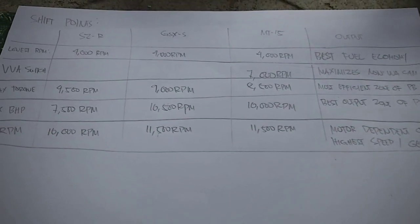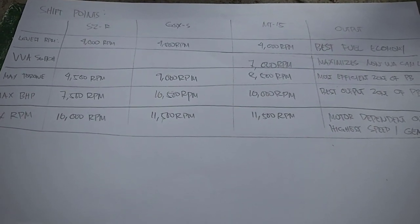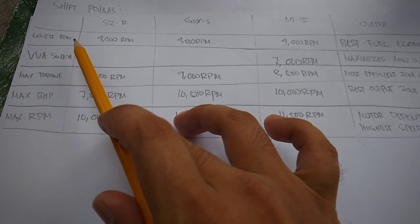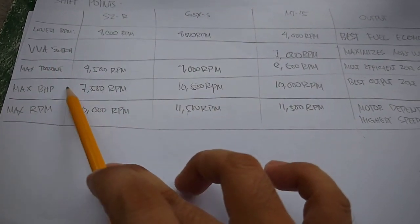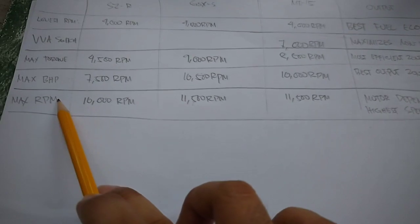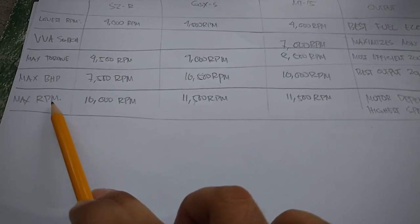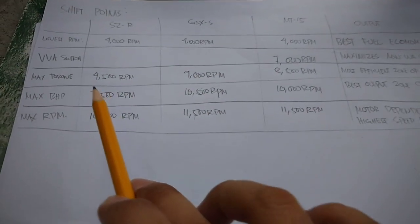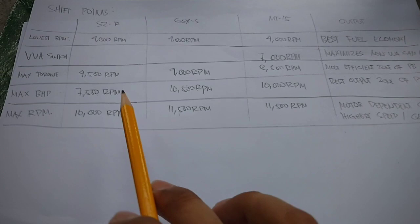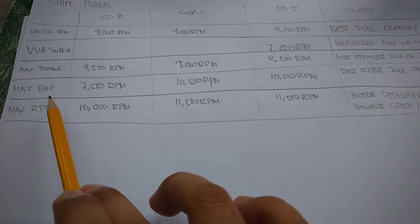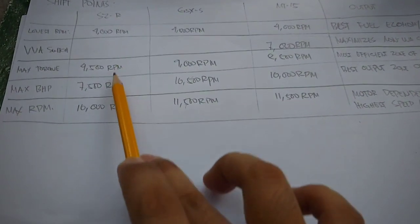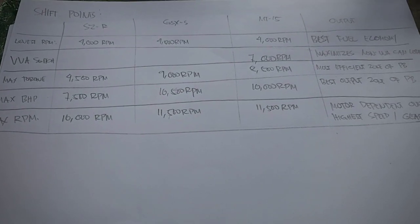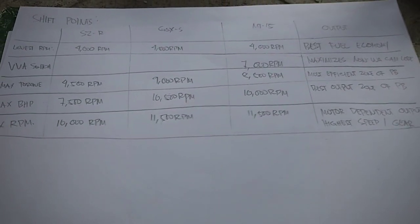So summarize natin, kung kailan yung optimum time para mag-shift: the lowest RPM, maximum torque, and maximum horsepower, as well as yung maximum RPM ng motor mo. Maximum RPM below the red line, not beyond the red line. So if ano yung modelo ng motor mo, just use Google search, hanapin mo yung maximum torque and maximum horsepower niya kung saan RPM sila lumalabas and then shift accordingly para ma-maximize yung gamit ng makina ng motor mo.